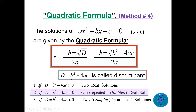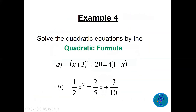The discriminant D is the number under the radical — not including the radical sign. Some books call it delta. D is a real number with three cases: if D is greater than zero, there are two real solutions; if D equals zero, there is one repeated real solution, x equals minus b over 2a; if D is less than zero, there are two complex non-real solutions.